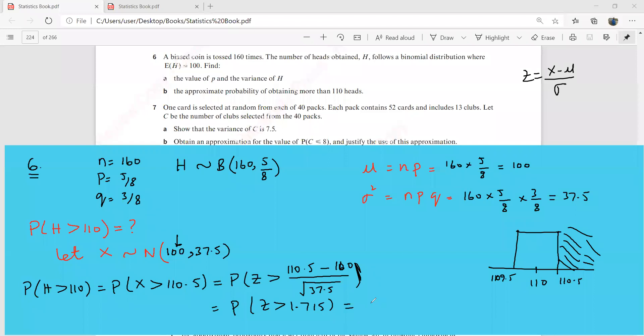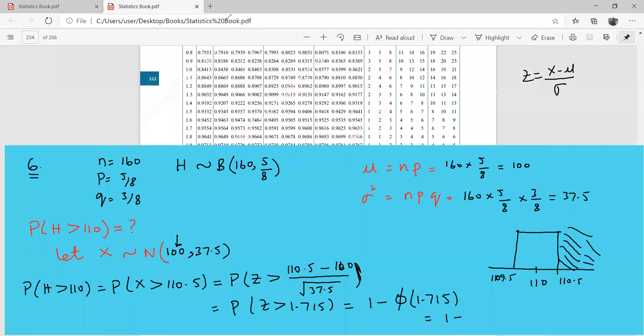And we know that this is going to be 1 minus phi of 1.715. We need to go to the table now. This is 1 minus, let's see what do we have from the table. This is 1.715. So here is 1.7. This is 1.715. And 1, 2, 3, 4, 5. This is your fifth value here. So this is going to be 0.9568. So this is 0.0432.